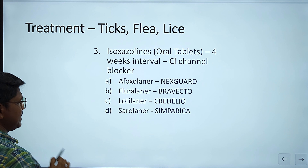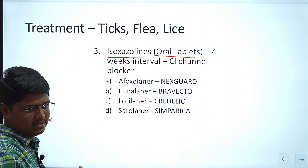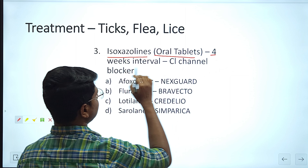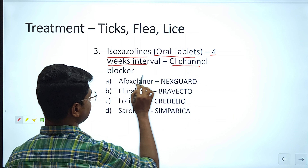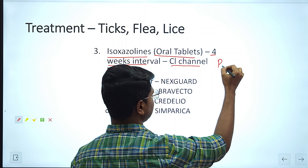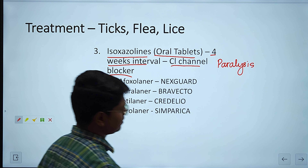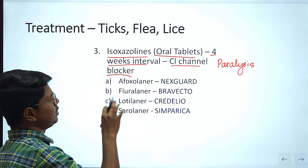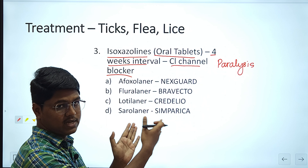There is also systemic treatment. Oral tablets are available — these are basically isoxazolines. They are usually given at monthly intervals, or 4-week intervals. They are GABA-mediated chloride channel blockers that cause paralysis of the nervous system of the tick before they lay eggs, and then kill the ticks. If you go through the packet, you will see it is effective against tick, flea, and lice. I will also discuss research on their application against mites.